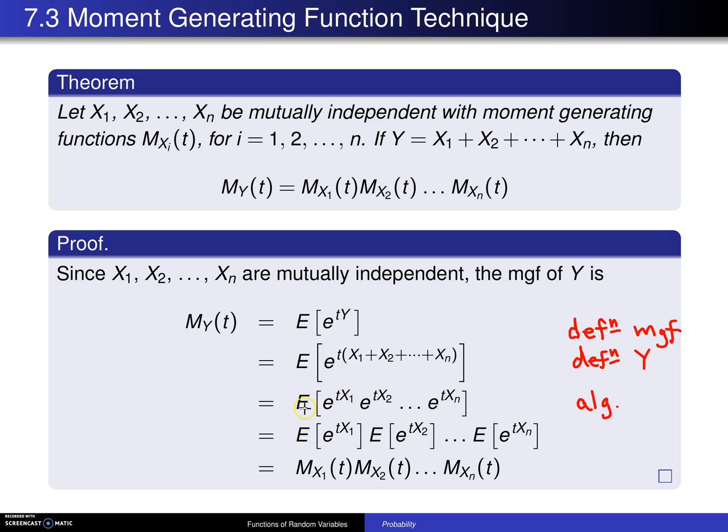At this point, how is it that we can break the expected value of a product into the product of the expected values? That is only true when you have independent random variables, and since these are mutually independent, that independence result gets used, and each one of these can be identified as the moment generating function of one of the X's. This returns to the definition of the moment generating function, and that completes the proof, because that's what we have on the right-hand side.